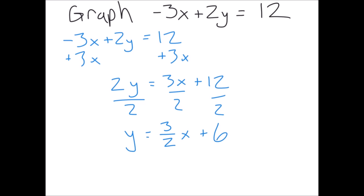The first step is to take the equation and put it into slope-intercept form by solving for y. First, move the 3x over by adding it to both sides. Then get y by itself by dividing everything by 2. It's important to divide each piece separately — you don't want one big fraction bar over 2. We want the mx term and b term to be separate so we can see our slope and y-intercept clearly. Solving gives y equals 3/2 x plus 6.